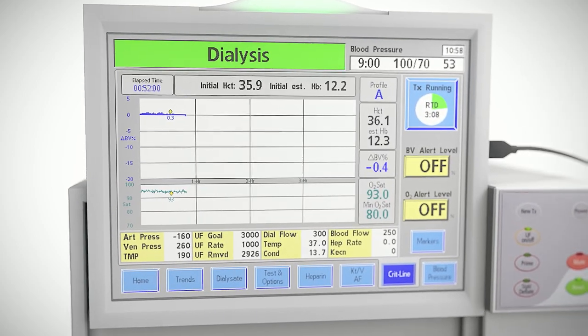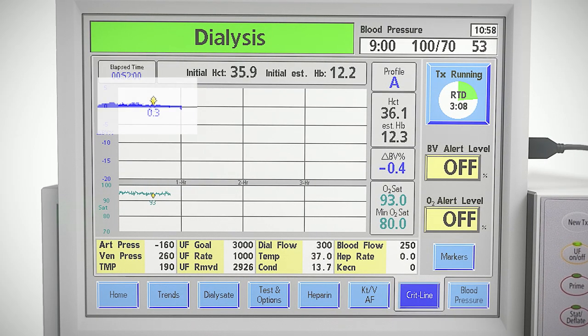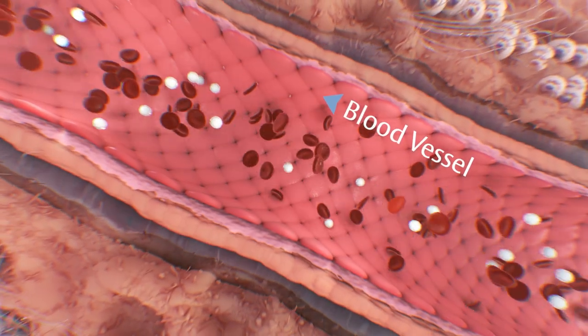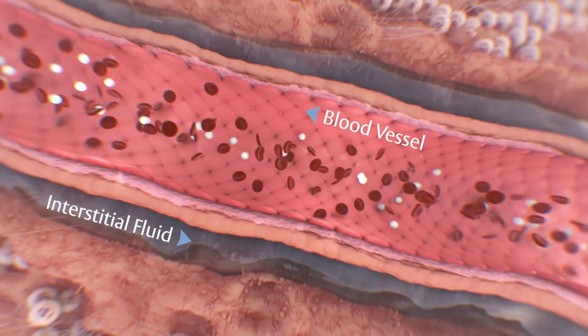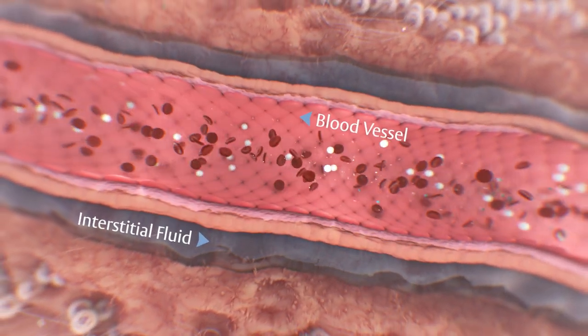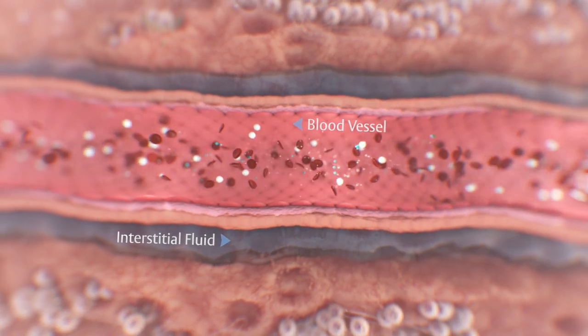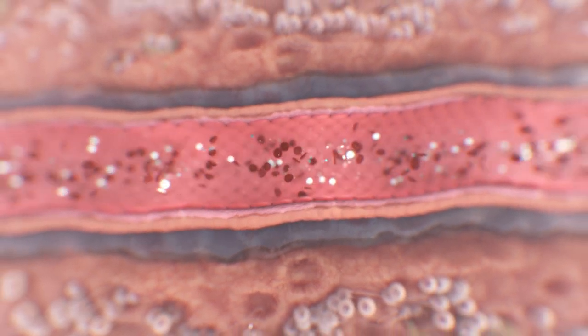Profile A is represented as a flat or slightly positive slope. This indicates that the patient's rate of plasma refill is the same as, or slightly greater than, the rate of ultrafiltration, suggesting that the ultrafiltration rate may be increased without the risk of immediate intradialytic symptoms.